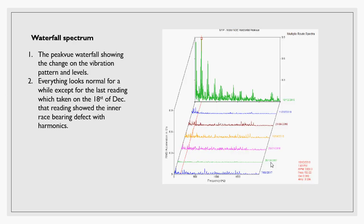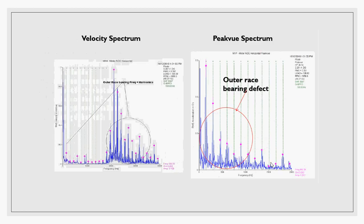As you can see in the waterfall spectrum, everything looks normal until the last reading taken on December 18th, 2018, which showed the outer race bearing defect with harmonics and a few sidebands. You can see in the velocity spectrum the outer race bearing defect frequency with many harmonics and a few sidebands — the spectrum is really very busy.